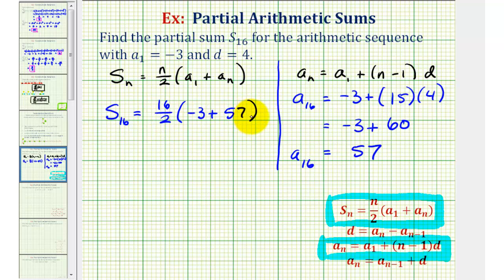And now we can evaluate this to find our partial sum. 16 divided by two is equal to eight. Negative three plus 57 is equal to 54. Eight times 54 is equal to 432, which is our partial sum.